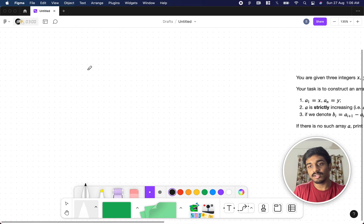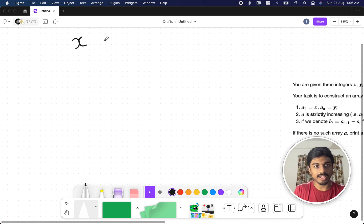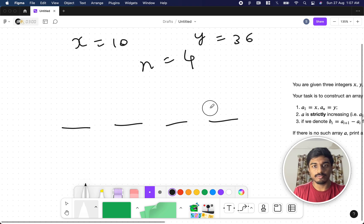So for example let's take this x value as 10 and y value as something like 36 and n value let's take it as 4. So 1 2 3 4 we can fix the y value here and we can fix the x value here.